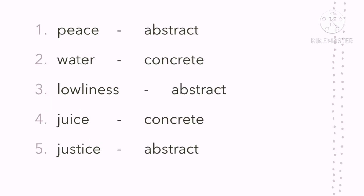Alright, time is up. Let's answer. Number one, we have peace — peace is abstract. Number two, we have water — water is concrete, because we can touch, taste, see, and sometimes smell it. Number three, we have loneliness — loneliness is an abstract noun. Number four, juice is a concrete noun because we can see, smell, taste, and touch it. And last, number five, we have justice — justice is an example of an abstract noun.